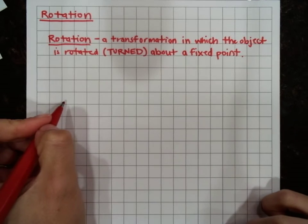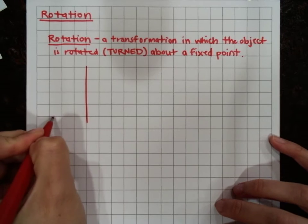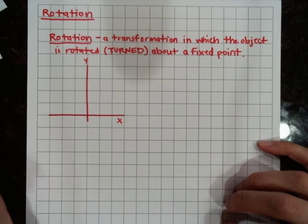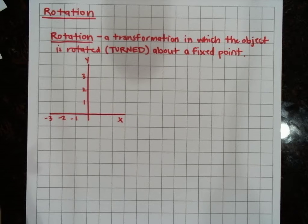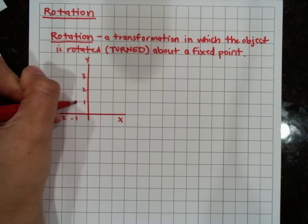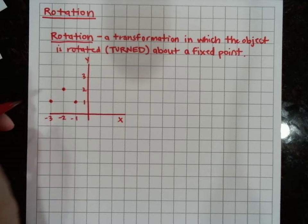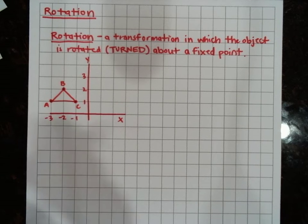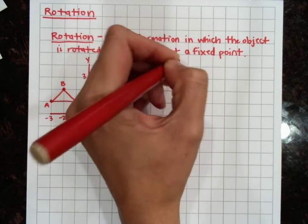Let's draw our graph. We have our x-axis and our y-axis. We are starting with a triangle which has points at negative one one, negative three one, and negative two two. We have point A, point B, and point C. They want us to rotate this triangle 90 degrees clockwise.